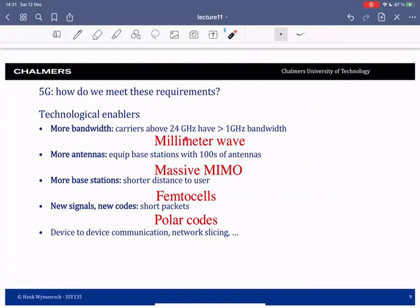The first is more bandwidth. The only way we can get more bandwidth is by going to higher carrier frequencies. In 5G, frequencies up to 24 gigahertz will be considered, called the millimeter wave regime. Another technological enabler is to use more antennas, called massive MIMO, where we equip base stations but not the user with hundreds of antennas. We'll mainly talk about this in this lecture. Another enabler is to use more base stations, meaning shorter distance to the user so higher SNR. This is called femtocells or picocells, base stations covering very small areas. We'll also consider new signals and new codes, for instance for short packets. One type of code recently introduced is polar codes. There are many other enablers but today we'll focus on what I think is most important: massive MIMO.